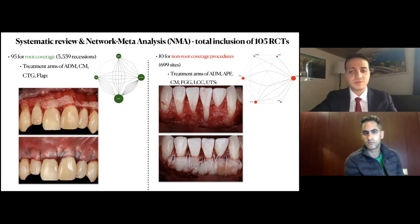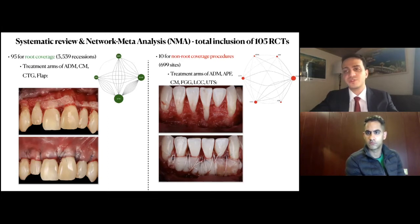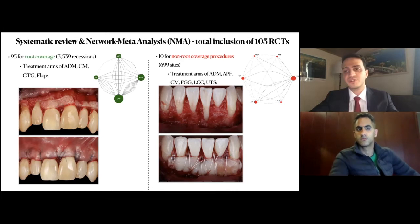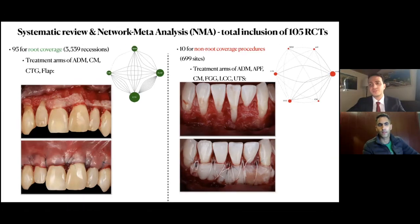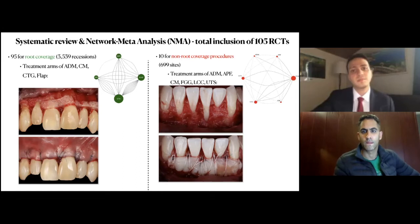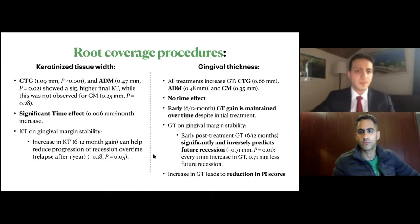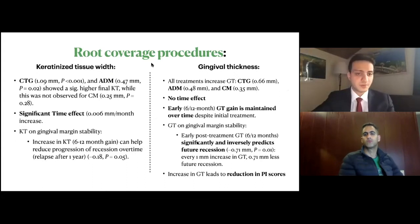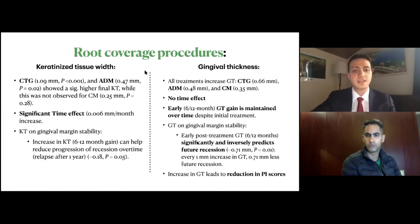We examined what approaches are used for modifying soft tissue phenotype in both root coverage (bilaminar) and non-root coverage (APF-based) procedures, and what the outcomes are relative to health and maintenance over time. For gaining tissue width, connective tissue graft is the most predictable graft material, followed by acellular dermal matrix, which can also give you nice tissue gain. We did not find this for collagen matrices. A certain level of keratinized tissue gain may help stop the progression of future recessions.